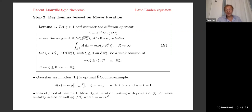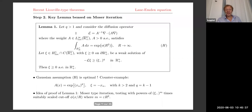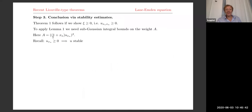So we have the lemma. The third ingredient is stability estimates. We want to show ψ is non-negative and apply the previous lemma to ψ. The weight A depends on the solution — it's (1 + x_n · u_{x_n})². To apply Lemma 1, we need to estimate this weight and verify the sub-Gaussian estimate for the integral of the weight on half-balls. Recall that any increasing solution is stable — this is a standard spectral property.